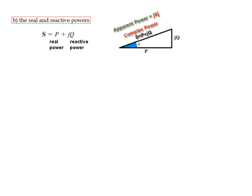Next is real and reactive power. Complex power can be written as P + jQ, where P is the real part and Q is the reactive power. From the power triangle diagram, the real part is P, the imaginary part is reactive power Q, and their vector sum is the complex power, while only the magnitude is the apparent power.